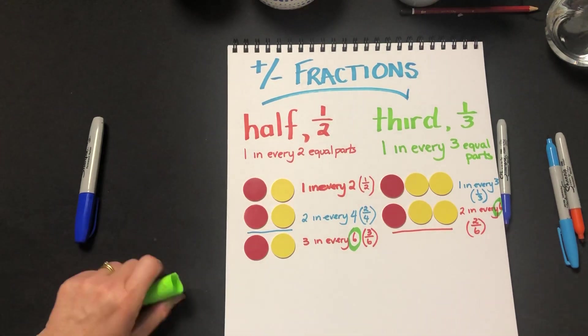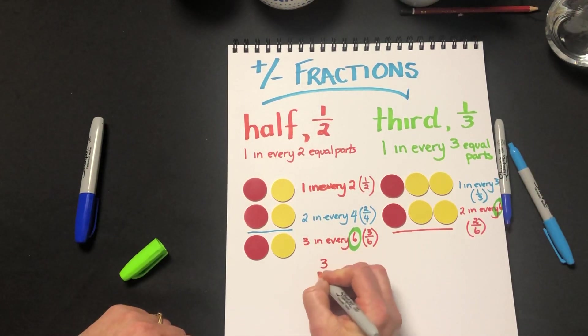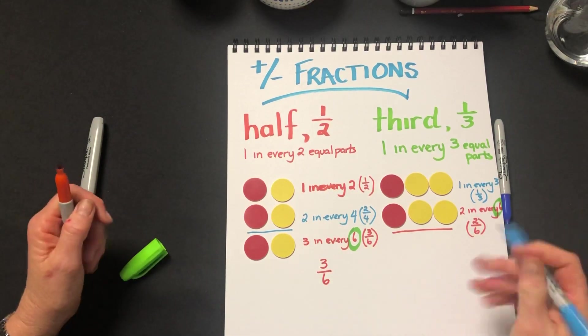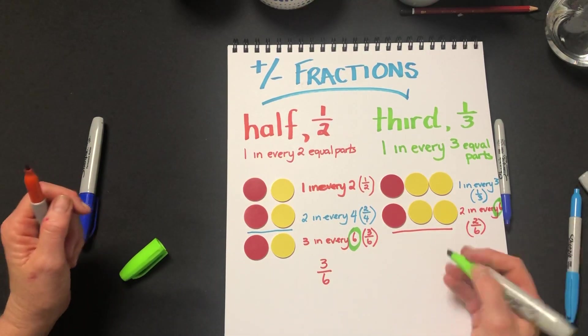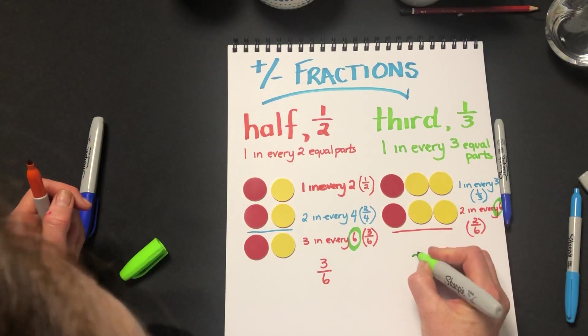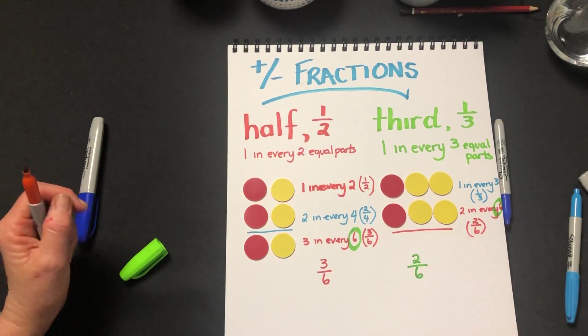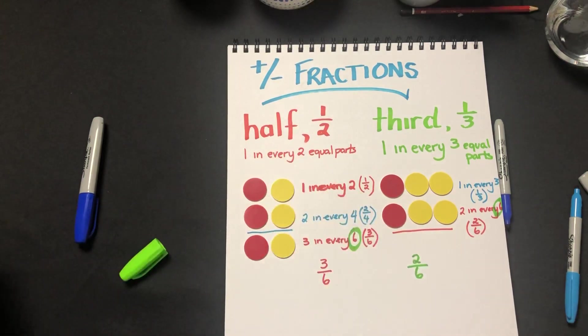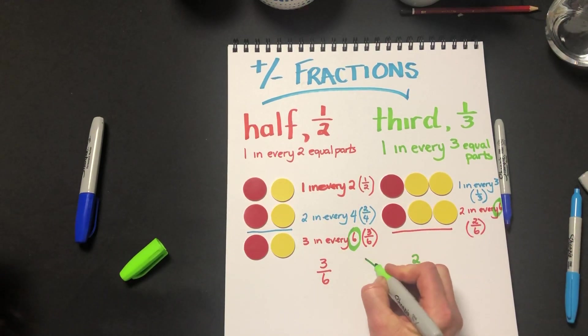Here we have three sixths and we're now comparing that to our two sixths. And we can see that we have a bigger fraction here. Three sixths. Three in every six is larger than two in every six. So we could have compared them.